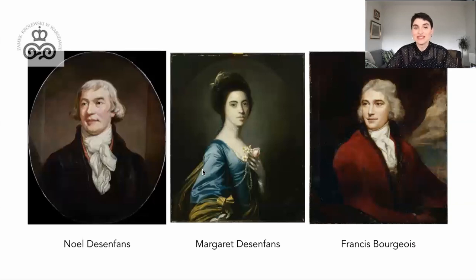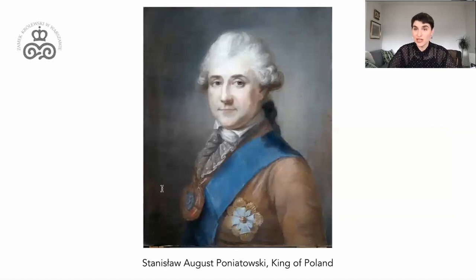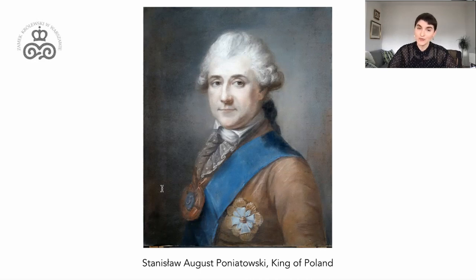The core of this collection was assembled by the gallery's founders: the art dealer Noel Desenfans, his wife Margaret, and the painter Francis Bourgeois. Famously the gallery has very strong ties to Poland, as the buying of paintings for the Dulwich collection was initially started under the direction of Stanisław August Poniatowski, King of Poland, for the benefit of his own collection in Warsaw. However, after the partition of Poland and Poniatowski's abdication, the founders decided to create their own gallery in South London.